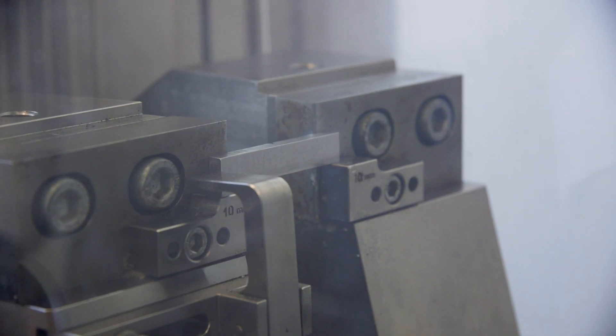This is our impact tester. It tests the toughness of materials using samples like this. This is a metal size machine, due to its size, and we're going to give it a go.